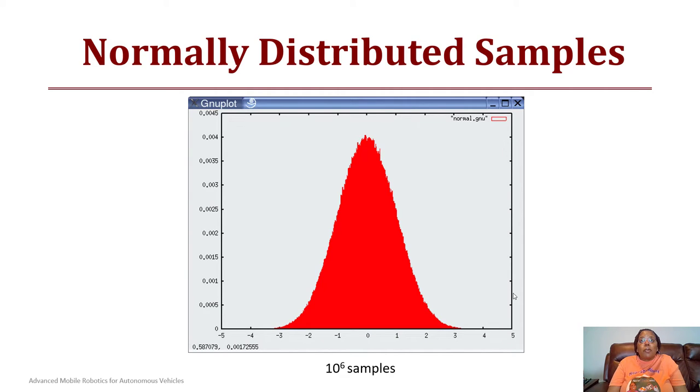For the normal distribution, after about a million samples, what you would see is you get an approximation of the shape of that Gaussian or bell curve by sampling that data using the algorithm that we just described.